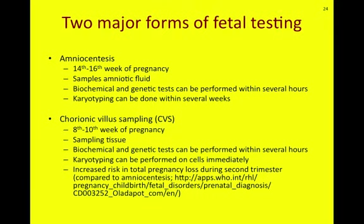An alternative measure for testing genetic disorders of the fetus is chorionic villus sampling, or CVS. CVS can be done somewhat earlier in pregnancy, between the eighth and tenth week. You are sampling and removing tissue from the chorionic villus — going through the cervix to actually get fetal cells from the chorionic villus.